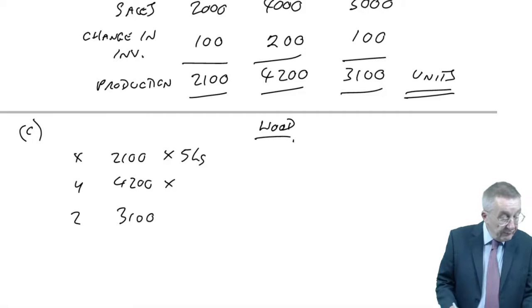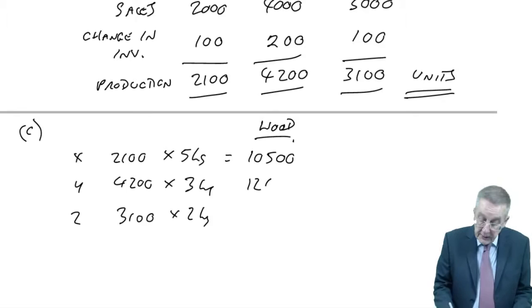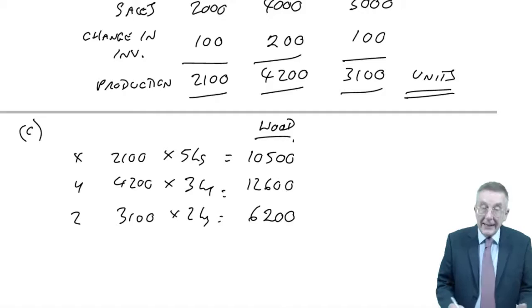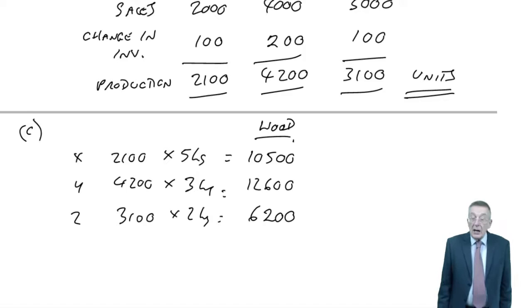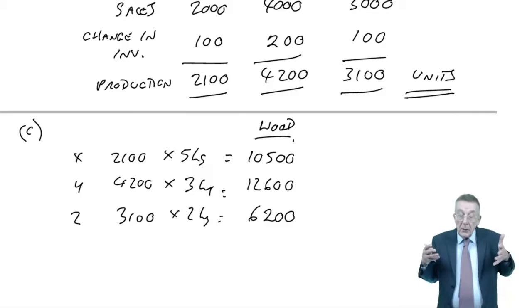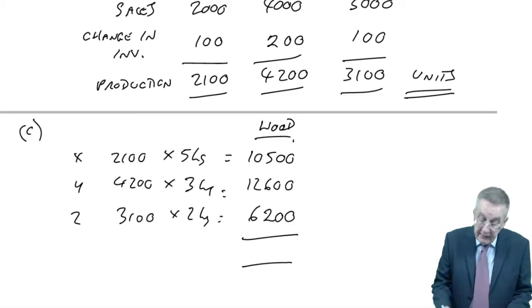And if we know how many we produce and how many kilos or litres of material we need for them side by side. For wood, each unit needs 5 kilos. Each unit of X, each unit of Y needs 3 kilos, each unit of Z needs 2. And so, in total, we'll need 10,500 for X, 12,600 for Y, 6,200 for Z. But of course, for this budget, whoever's in charge doesn't really care which product needs it. He needs to know, or she needs to know, how much wood in total we need. So here, the total is essential: 29,300 kilos.